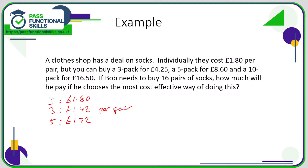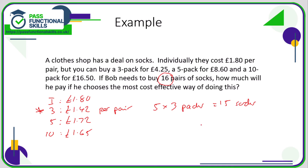A ten-pack for £16.50 works out as £1.65 per pair. So Bob needs 16 pairs of socks. You might think the easiest way is a ten-pack, a five-pack, and an individual pair — but actually the three-pack is the best value. To get 16 pairs, he can get five lots of three-packs, which gives 15 pairs, and then buy one individual pair.